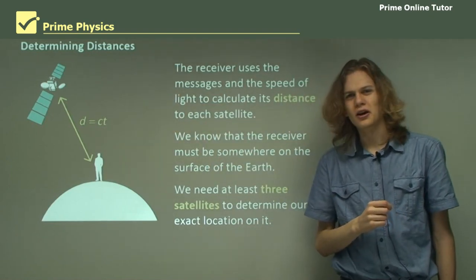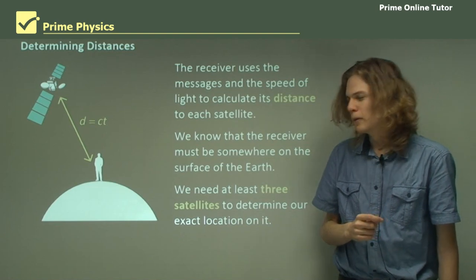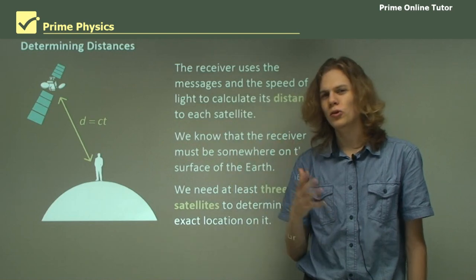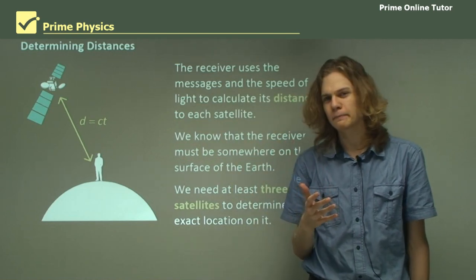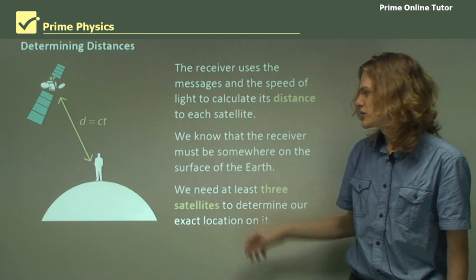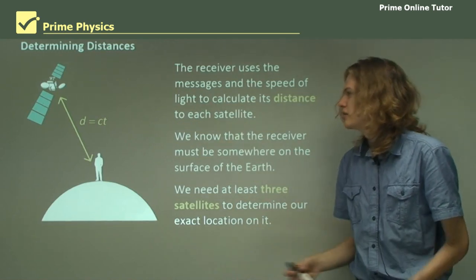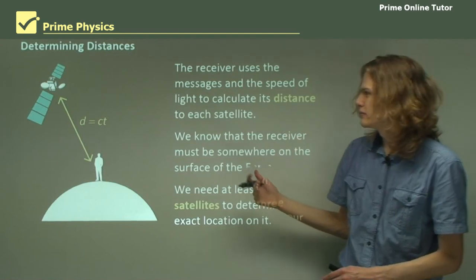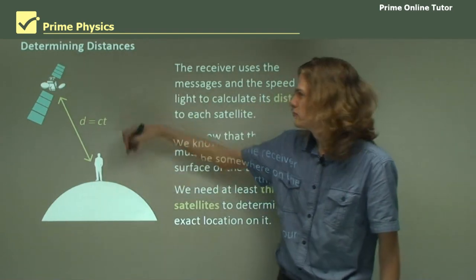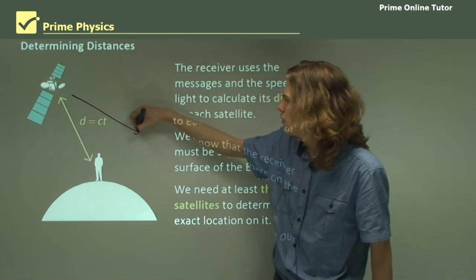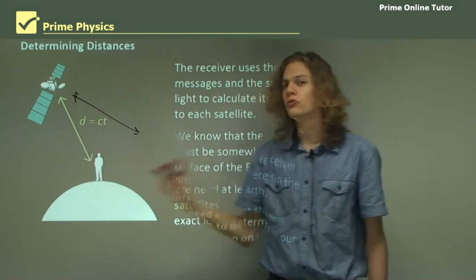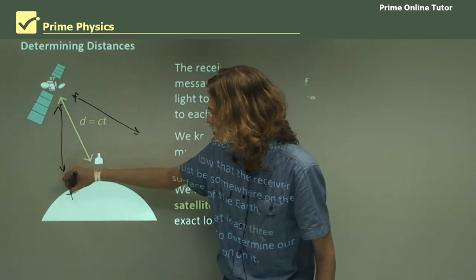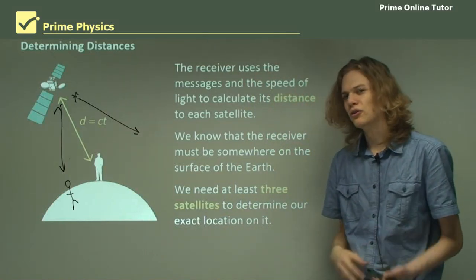So why is this useful? It's not useful if we have only one distance on its own, but if we have more than one, it can be very handy. The problem with a signal like this is that although we know this distance, we don't know whether it's straight down this way or maybe down this way, or maybe behind this fellow or in front of this fellow. That could be the same distance, but it's quite a different location.